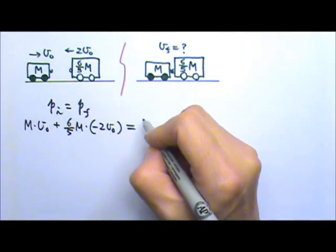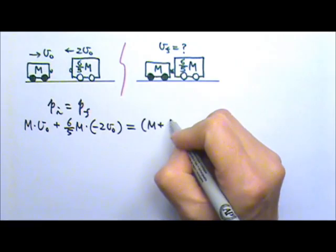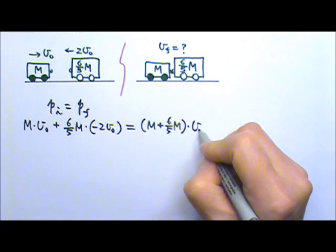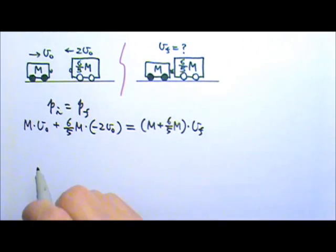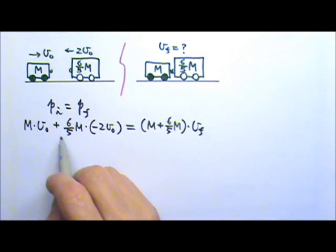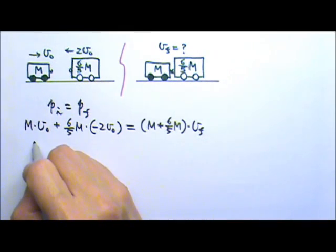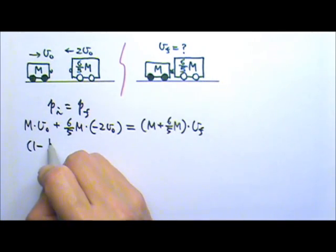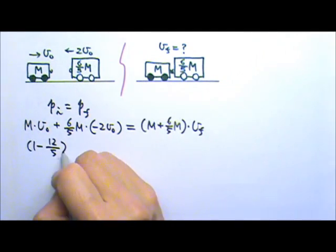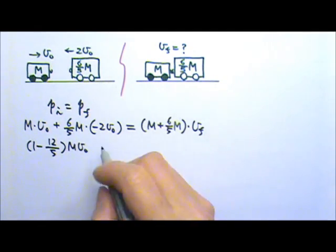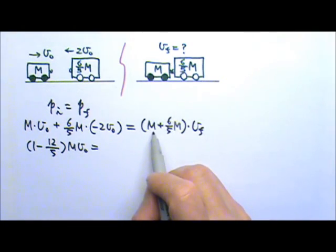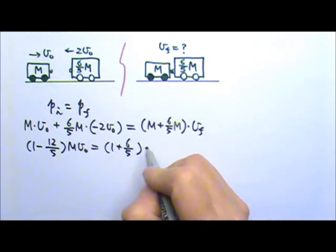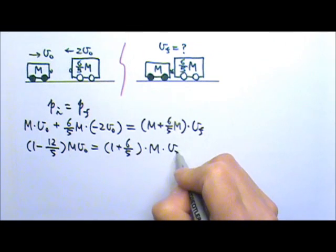Afterwards the two carts stick together, so the mass that's moving will be the sum of these two added together. And they move together with that same final velocity. So if I factor out m and VO, I will get 1 here plus, actually minus 12 fifths times m VO. And this side I will have, if I factor out m, I get 1 plus 6 fifths times m times the VF.